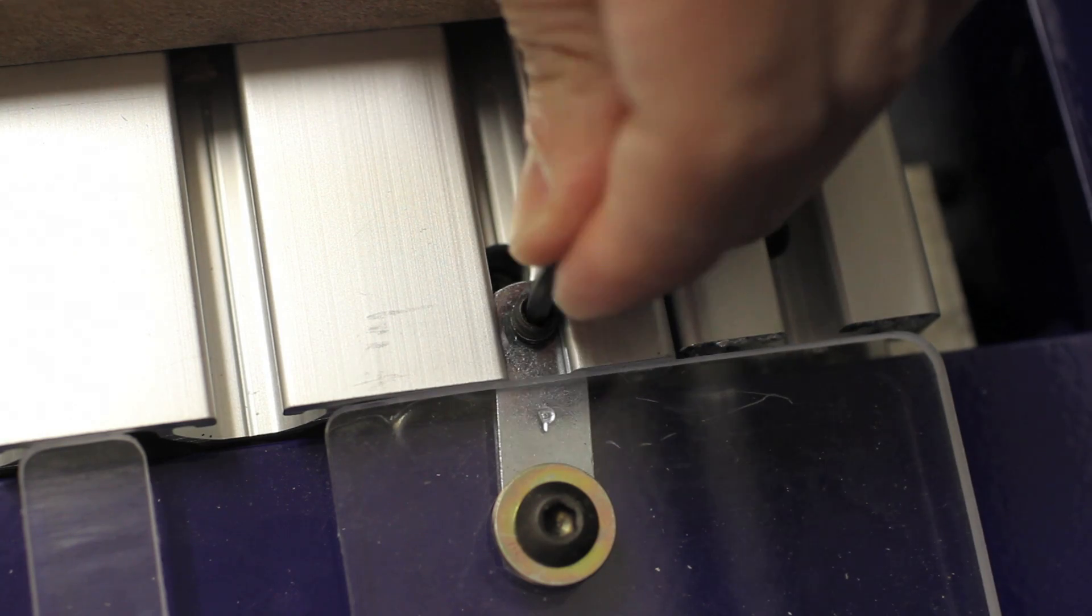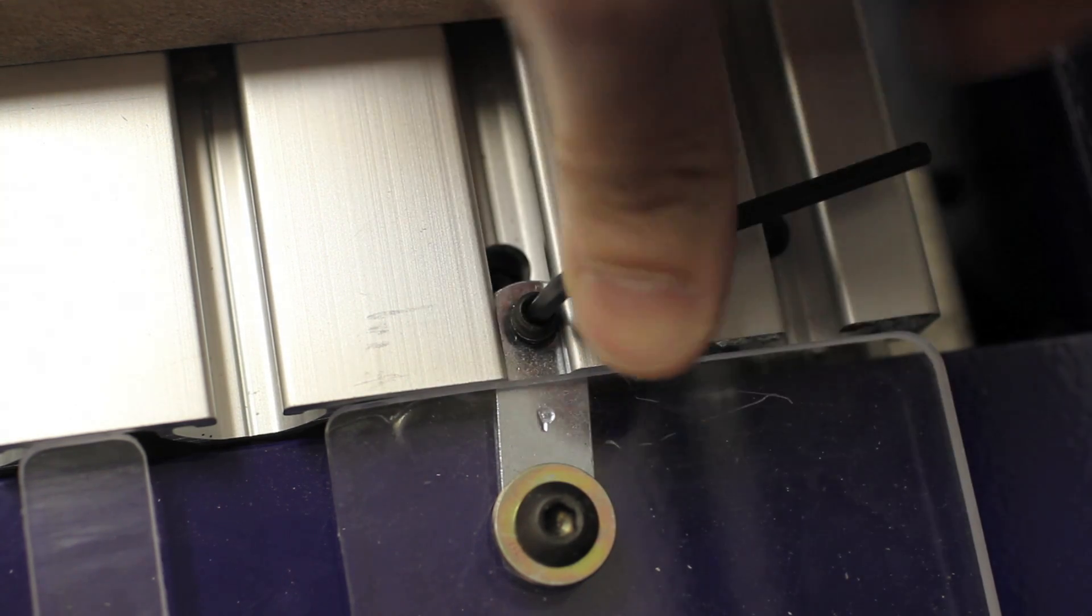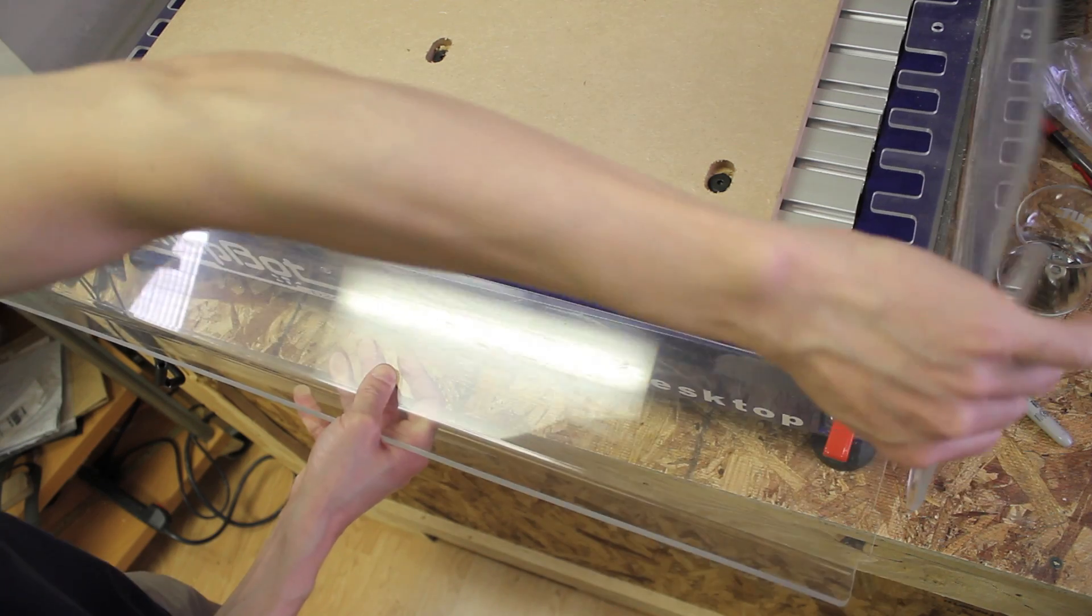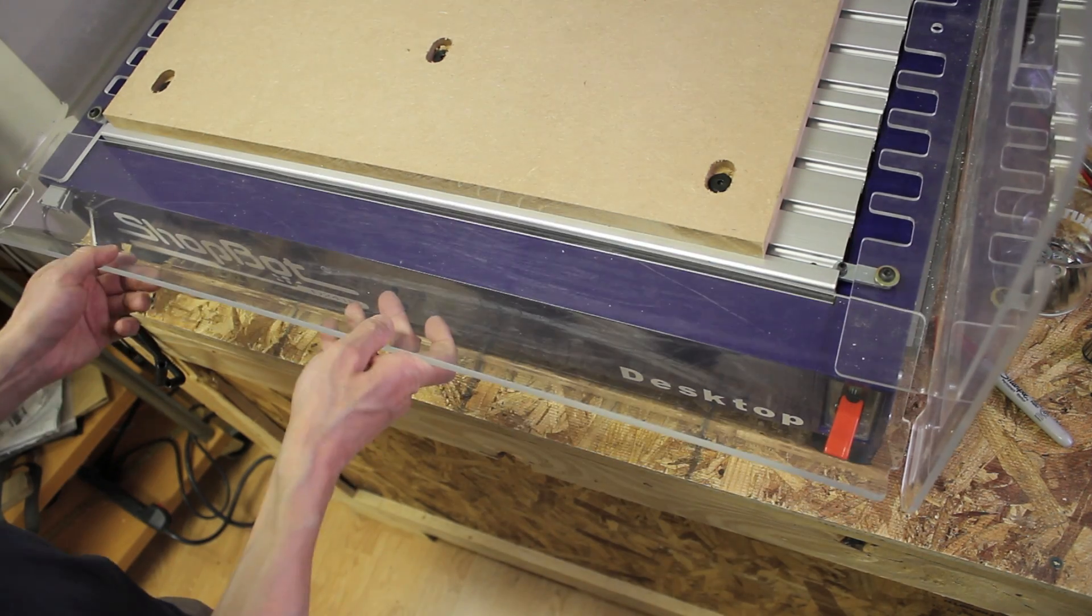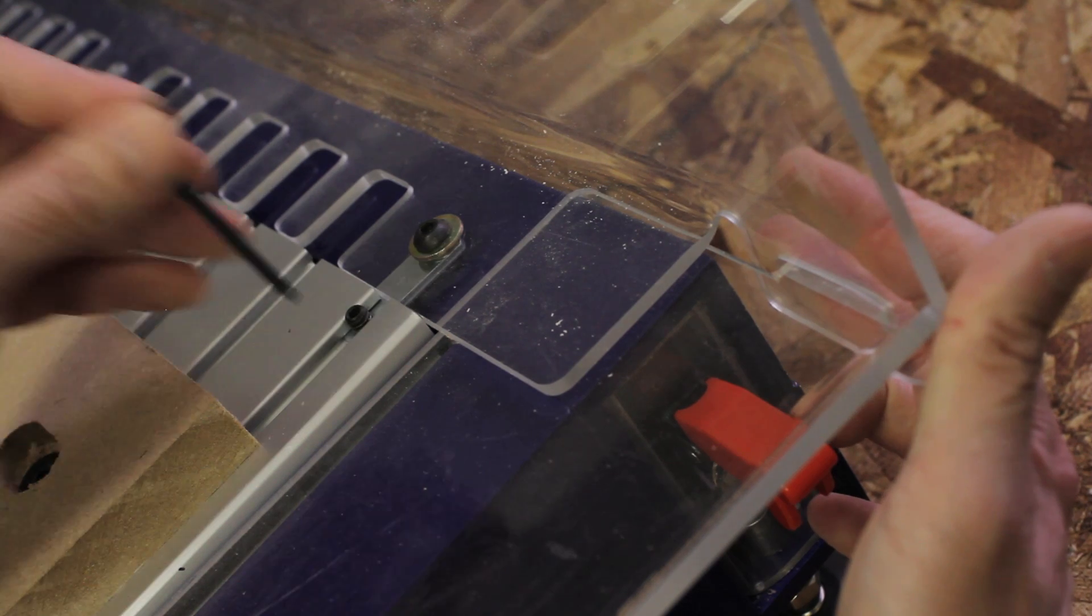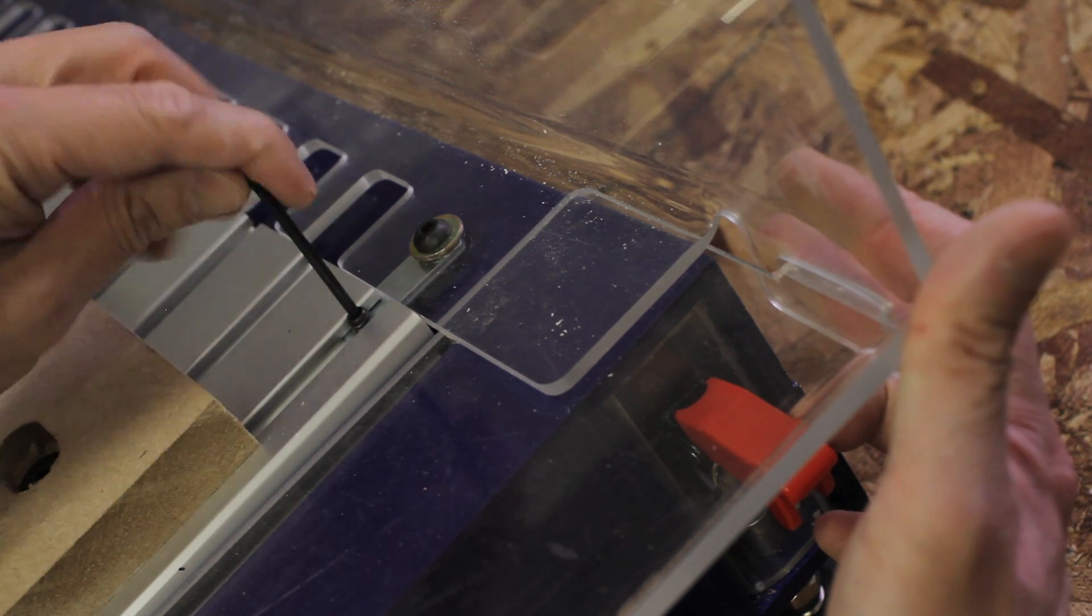Following that, tighten down the grub screws on both sides, starting with just the rear ones. Next you'll slide the front lip into place. Once you've got its tabs locked into the slots of the sides, then you can go ahead and tighten the rest of the grub screws down.